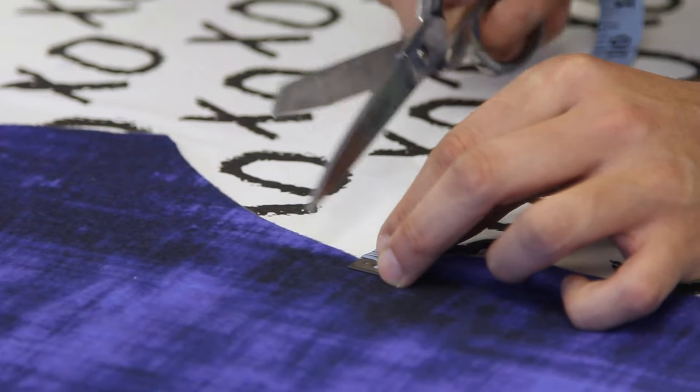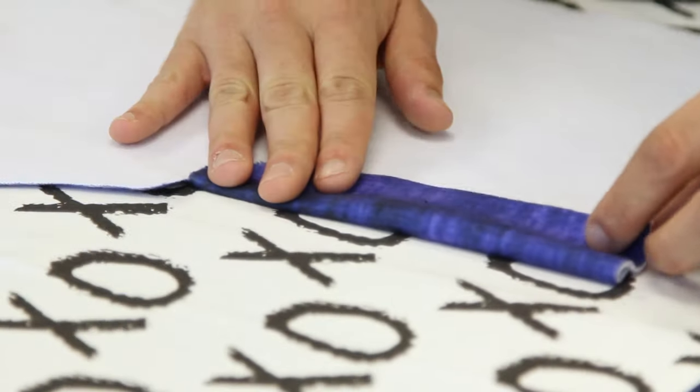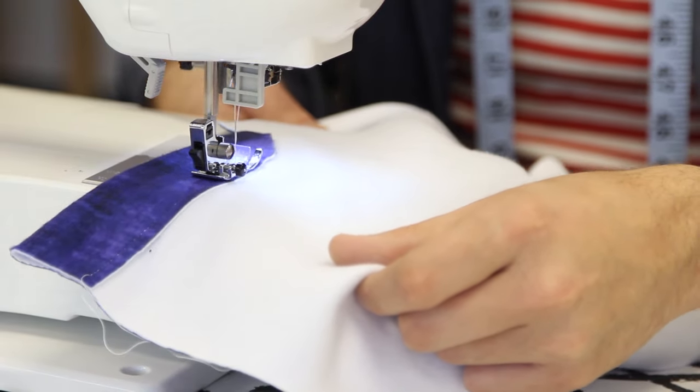On the left front pant leg, snip the seam allowance on the bottom of the fly. Fold the fly on the left pant leg over at the crotch so that the wrong sides are together, and stitch down a fourth of an inch seam allowance along the curve of the fly.